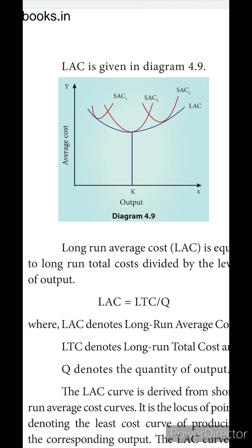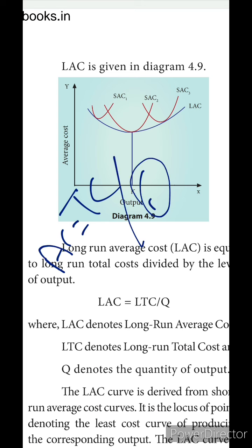How can we find the long run cost curve? The long run average cost is equal to long run total cost divided by Q. We already studied that AC equals TC by Q — it is the same here, but with long run values added. So, long run average cost equals long run total cost divided by quantity.